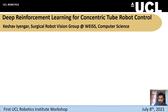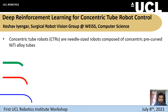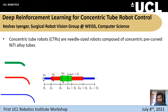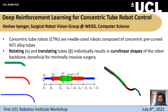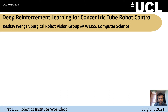Hi everyone, my name is Keshav and I'm going to be talking about our work for concentric tube robot control. Concentric tubes are these needle-sized robots composed of concentric pre-curved alloy tubes. When we arrange them concentrically and extend and rotate each tube individually, we can create these curvilinear backbone shapes which can be beneficial for minimally invasive surgery, but these interactions are quite complex in the model.